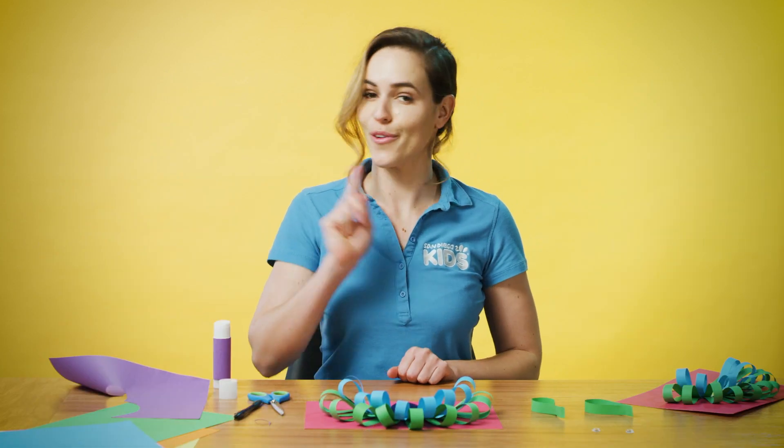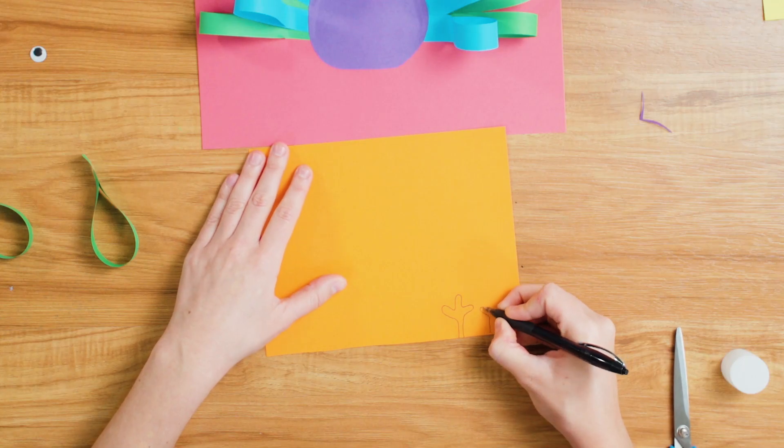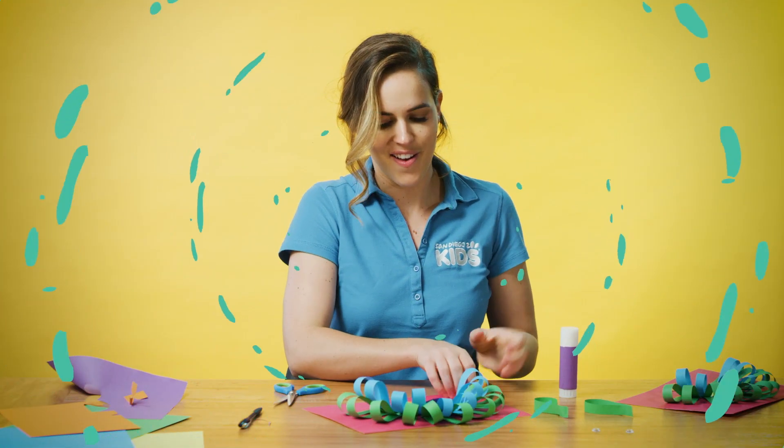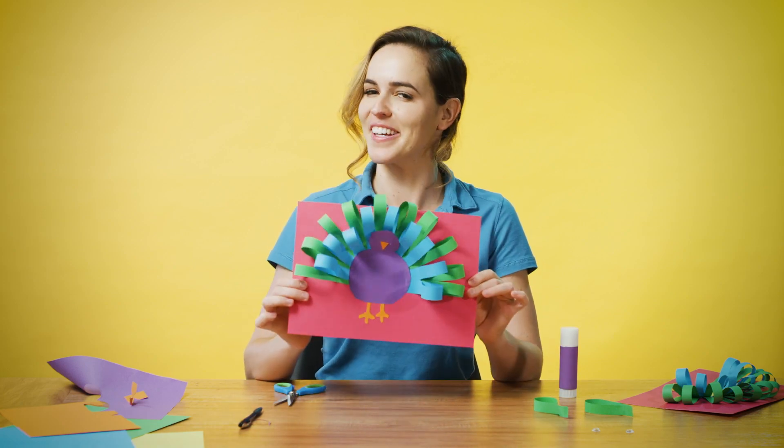I think I'm going to choose orange cardboard for the feet and the beak. I'll draw those out first and then cut them. And last but not least, our googly eyes.